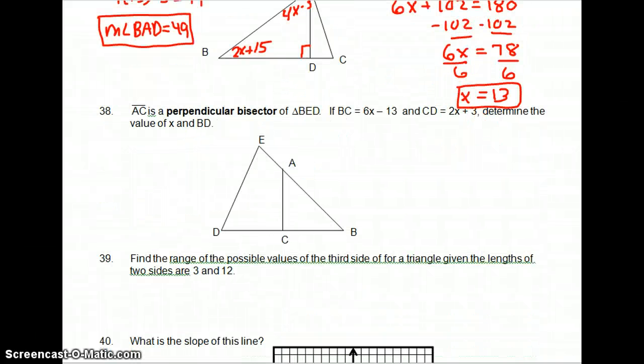Number 38 says AC is a perpendicular bisector. BC is 6X minus 13. CD is 2X plus 3. Find X and BD. Now AC is a perpendicular bisector. So that means it's perpendicular and it bisects this line here. BC is 6X minus 13. CD is 2X plus 3.